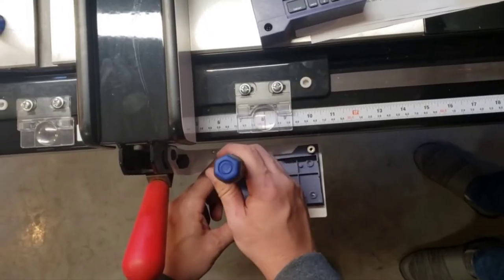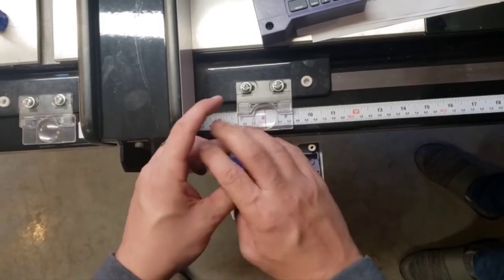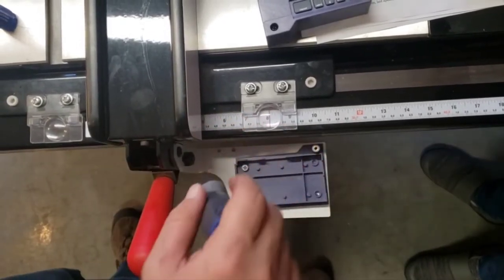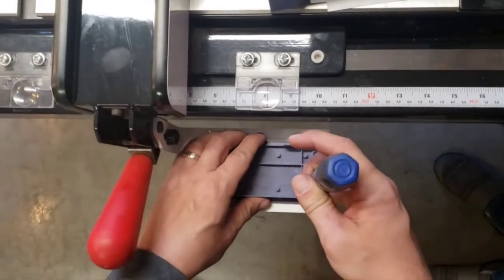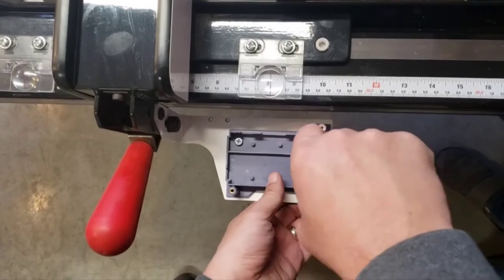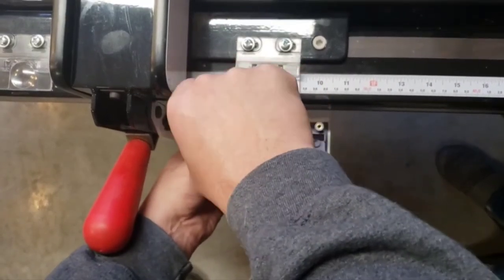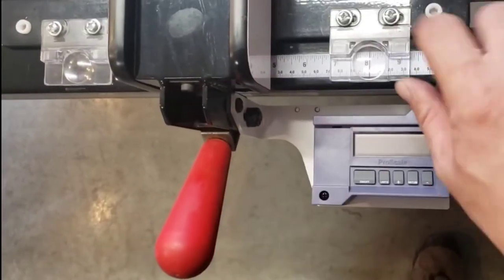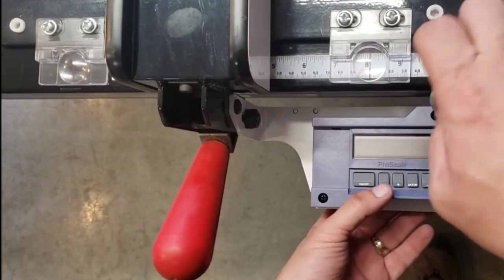Step 10: Attach the digital readout base to the readout bracket using the supplied number 8-32 by 3⅛ inch flathead screws. Step 11: Replace the digital readout cover and tighten the screws.